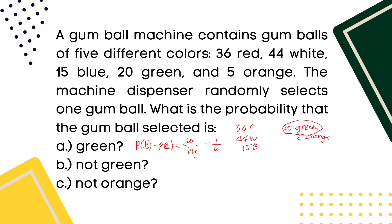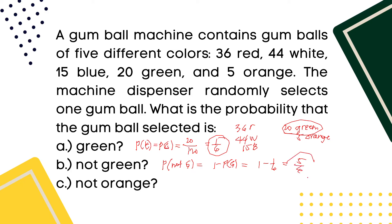What is the probability that the gumball selected is green? The probability of green is 20 over 120, which simplifies to 1/6. Therefore, the probability of not green is equal to 1 minus 1/6, which equals 5/6.